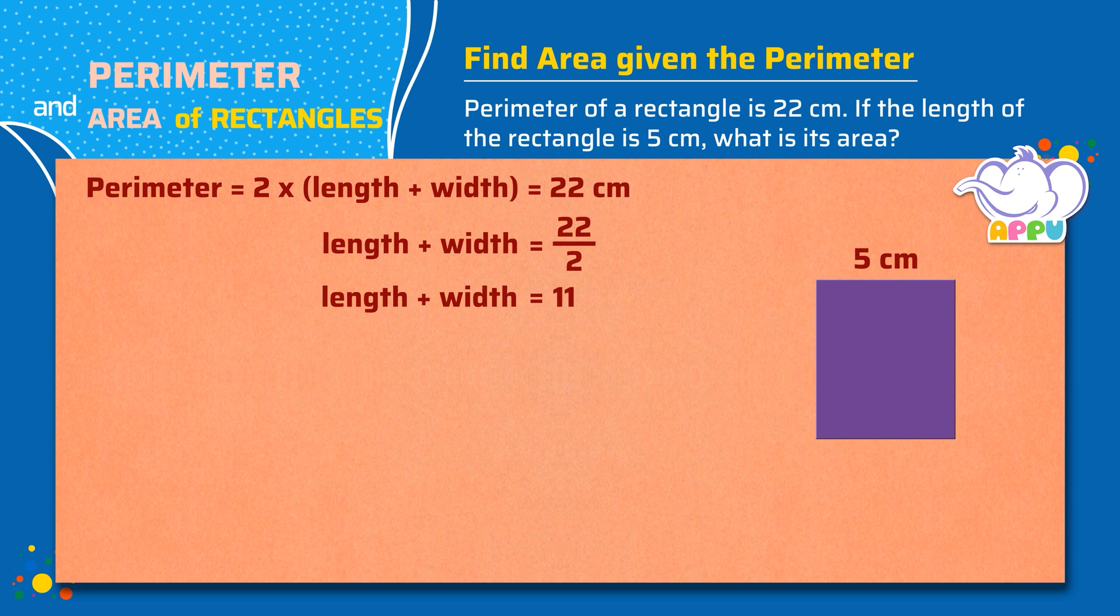Since we have to find the width, we move the length to the right-hand side. So width equals 11 minus length. Hence, width equals 11 minus 5, which equals 6 centimeters.